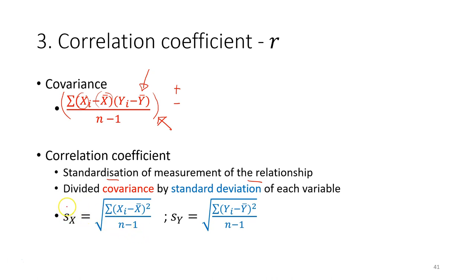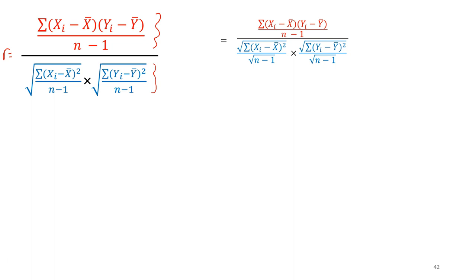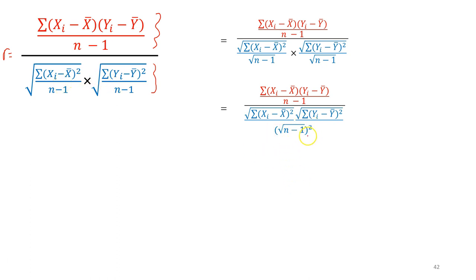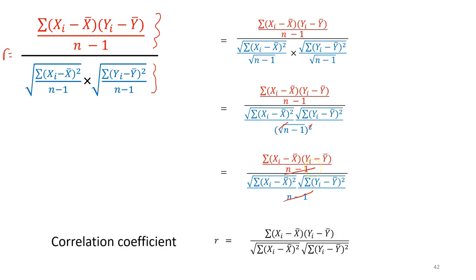The covariance itself is not standardized, so what we do is divide the covariance by the standard deviation of each variable. We have the standard deviation for the first variable S and the standard deviation for the second variable. We can multiply these two together, take the square root, and after canceling out the degrees of freedom, what remains is the correlation coefficient — a standardized covariance between two variables.